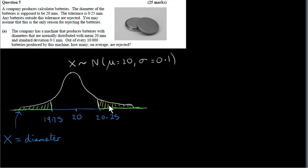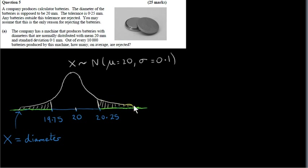By symmetry, these two areas are the same, because 19.75 and 20.25 are equidistant from X equals 20. So we only have to find the area of one of these tails, and then double it to get the total area. Let's find the area of this right-hand tail region.